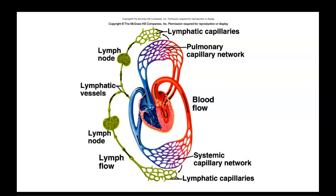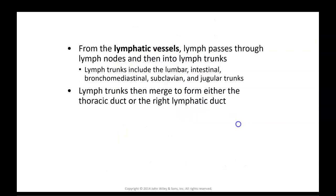Here's a picture showing how the lymphatic system runs along with the circulatory system and how it filters and brings lymph back into the venous system before it enters through the superior vena cava. From the lymphatic vessels, lymph passes through the lymph nodes and then into the lymph trunks. The lymph trunks include the lumbar, intestinal, brachio-mediastinal, subclavian, and jugular trunks. These lymph trunks then merge and form either the thoracic duct or the right lymphatic duct — those are the last two stops before lymph comes back into the venous system.